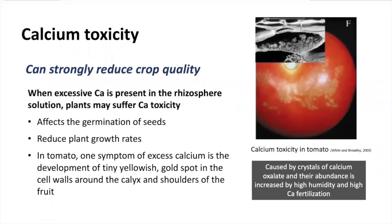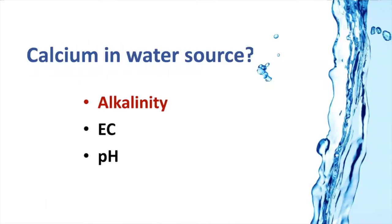Now, let's move to speak about calcium toxicity. Is this common? Calcium deficiency is usually more frequent, but calcium toxicity can also happen. This can strongly reduce crop quality. It can affect germination and also reduce plant growth rate. In tomato, we can spot yellowish gold spots in cell walls around the calyx and also in fruit shoulders. Calcium is one of the nutrients that will accumulate in closed hydroponic systems, because plants take up calcium slower than other nutrients. So, if you are working in a closed hydroponic system — meaning you are recirculating water — you need to check your calcium quantities at least every month.